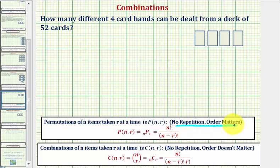If order does matter, then we'll use a permutation. If the order does not matter, then we use a combination.